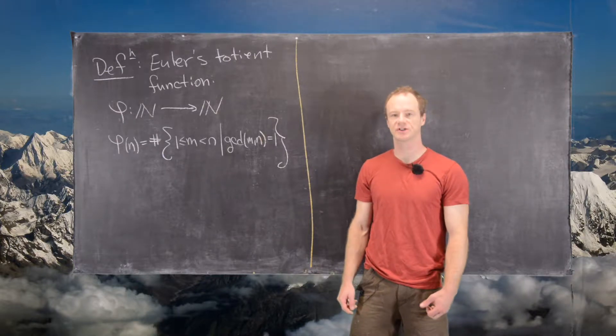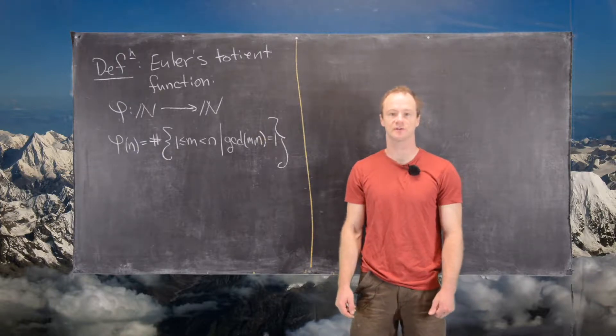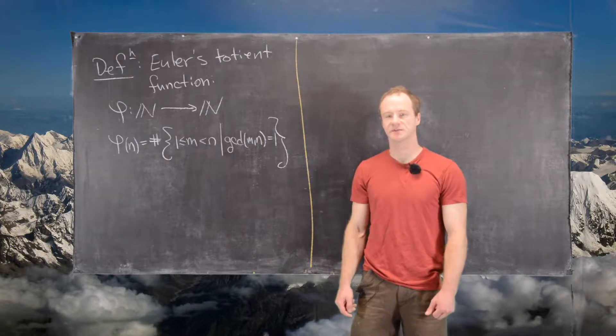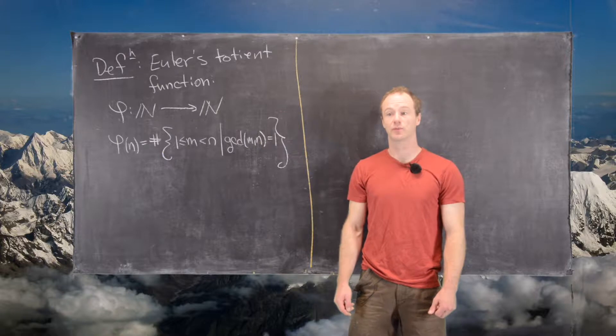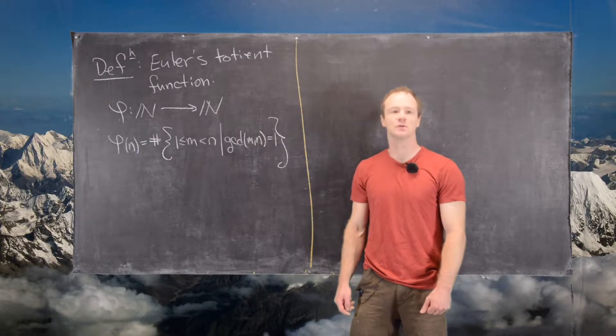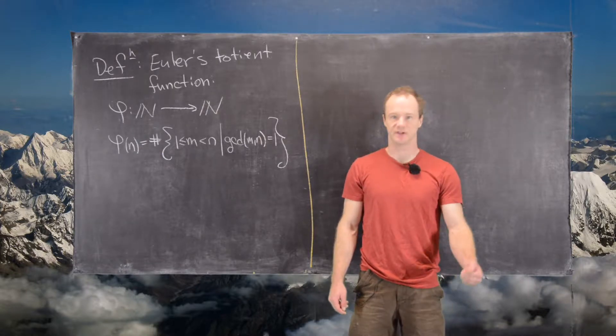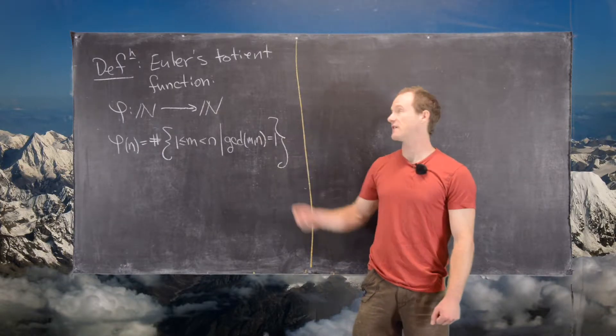In this video we're going to look at the definition of Euler's phi function or Euler's totient function, along with some examples, and then we'll prove a formula for its value on the prime numbers. We'll do a formula for its value on all natural numbers in a later video.